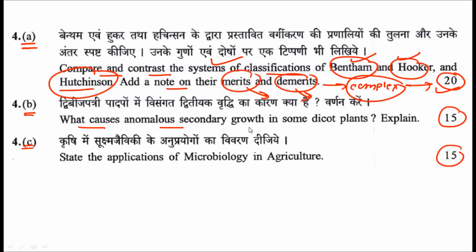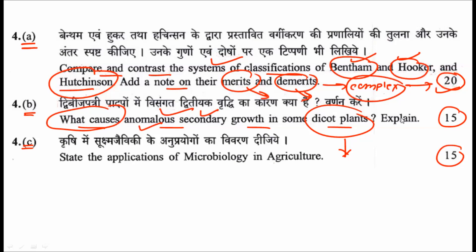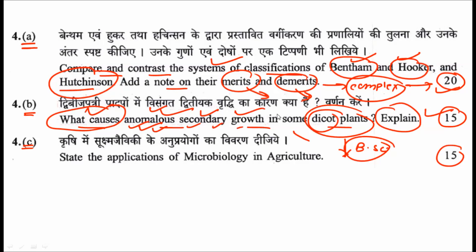The second sub-question asks what causes anomalous secondary growth in dicot plants. You just have to explain the causes of this anomalous secondary growth in dicots. By discussing the proper reasons and causes, you will get 15 marks straight away. This topic is covered in detail in BSc Honours botany courses.